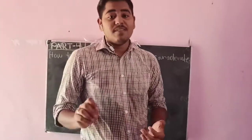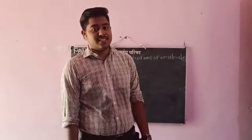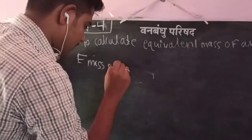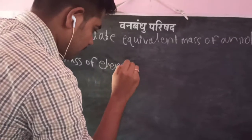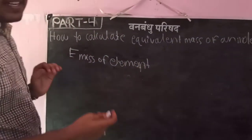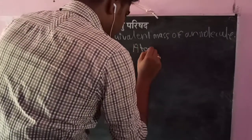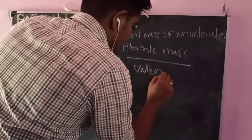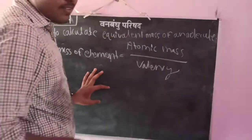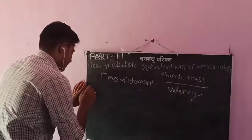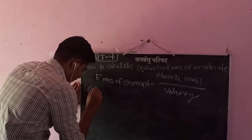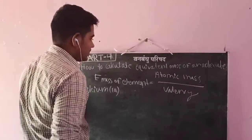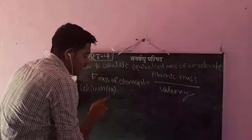Equivalent Mass is calculated using the formula: Equivalent Mass equals Atomic Mass divided by Valency. How do we calculate Equivalent Mass? Let's look at examples.